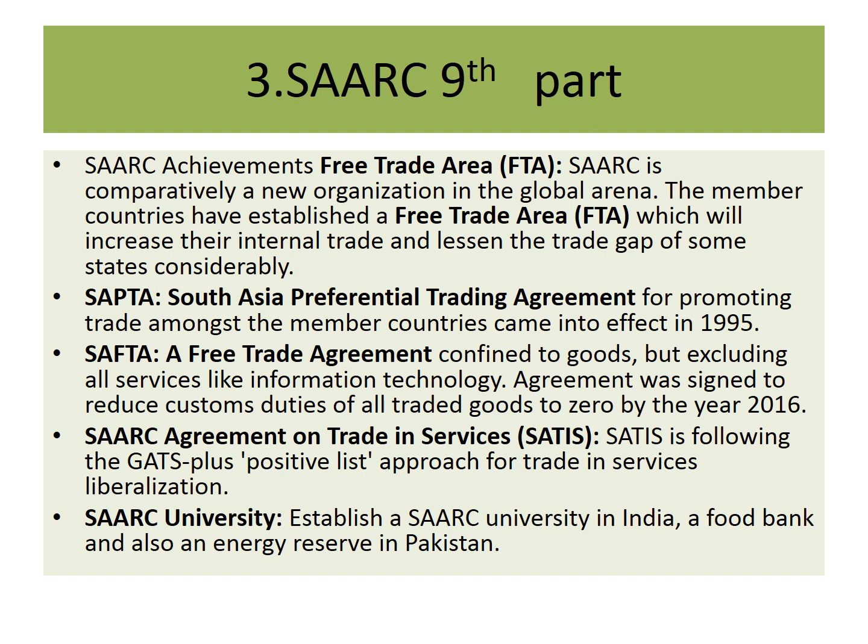The SAARC Agricultural Information Centre, the first regional institution of SAARC, started functioning in Dhaka in January 1989. Its main objective is sharing information mutually for the advancement of agriculture, fisheries, forestry and allied disciplines. The problems and prospects of agriculture and ecology of the SAARC countries are more or less the same. The SAARC Technical Committee on Agriculture proposed the establishment of a SAARC agricultural information system, and the standing committee approved the proposal for promotion of trade.